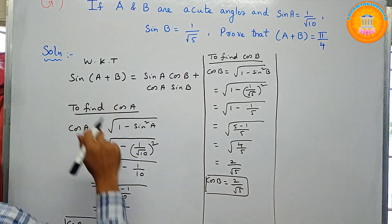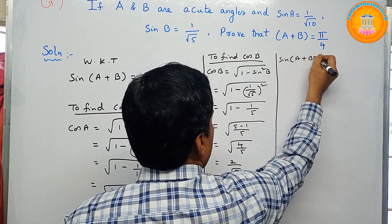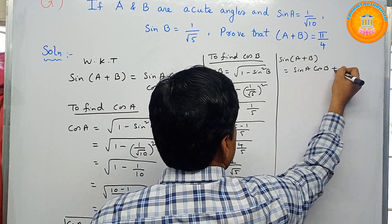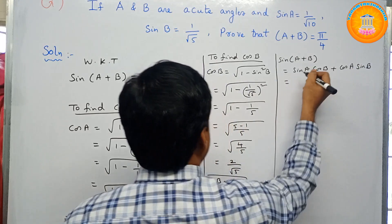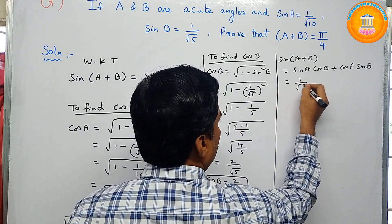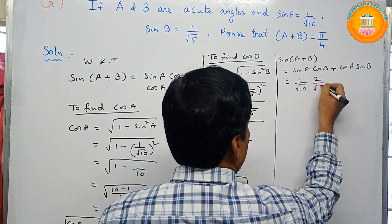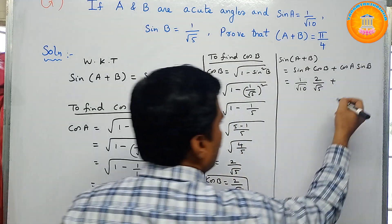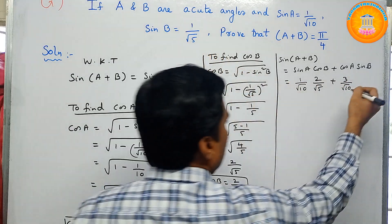Now apply these values in the formula: sin(A + B) = sin A cos B + cos A sin B. Substituting: sin A = 1/√10, cos B = 2/√5, cos A = 3/√10, sin B = 1/√5. So sin(A + B) = (1/√10)(2/√5) + (3/√10)(1/√5).